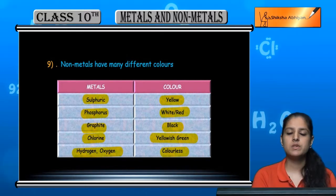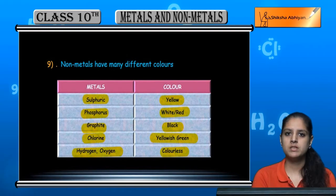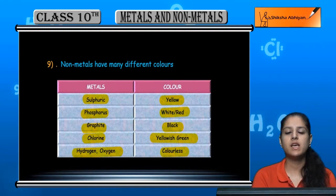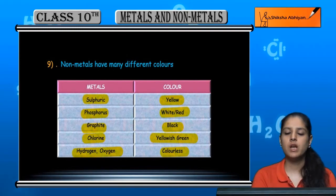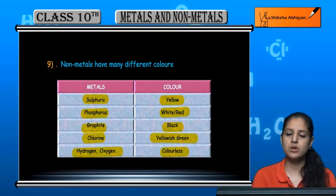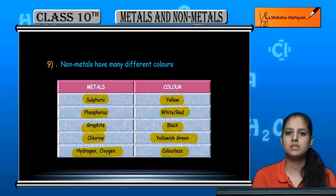So these were some of the physical properties of non-metals, which as you have seen are opposite to those of metals. We will now discuss some of the exceptions to the properties of both metals and non-metals.